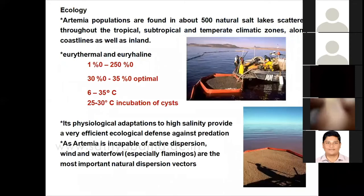Regarding ecology, artemia is euryhaline and can tolerate a wide range of salinity from 1 ppt to 50 ppt. The optimal salinity needed for hatching is 30–35 ppt. They can tolerate 6–30 degrees Celsius, but for hatching purposes the optimal temperature needed is 20–30 degrees Celsius for proper incubation of cysts.